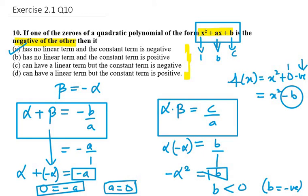The right option is: has no linear term and the constant term is negative. Linear term is the second one. You can see that it is missing from here. It is 0. Therefore it has no linear term in it.